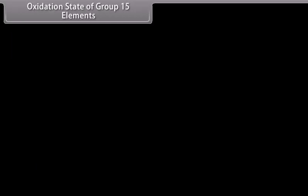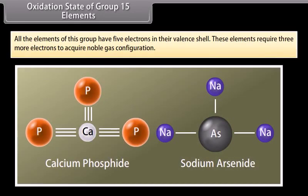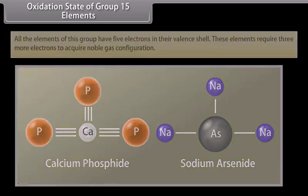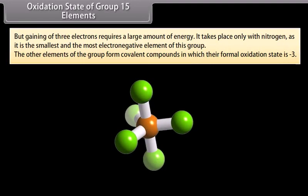All elements of group 15 have 5 electrons in their valence shell and require 3 more electrons to acquire noble gas configuration. Gaining 3 electrons requires a large amount of energy and takes place only with nitrogen, as it is the smallest and most electronegative element. The other elements form covalent compounds in which their formal oxidation state is −3.